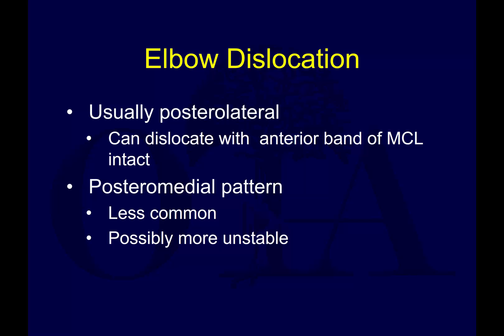The mechanism is typically posterolateral. It can dislocate with the anterior band of the medial collateral ligament intact. These typically occur with a fall on an outstretched hand, axial loading, supination, and external rotation of the forearm — typically in a posterolateral direction, and it's the most common type. There's often a circle of injury, with the lateral ulnar collateral ligament failing first, typically by stripping or avulsing off the lateral epicondyle, and then the MCL usually failing last.